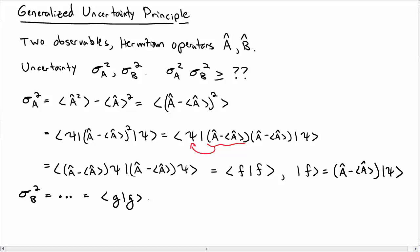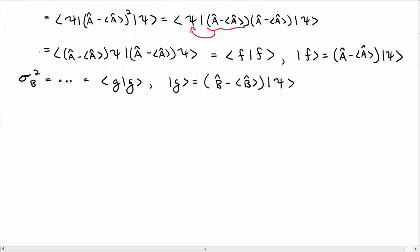For sigma-B squared, I can do a similar thing — it's the inner product of G with itself, where the state G is the operator B minus its expectation value acting on the generic state psi. So all I've done is rewrite sigma-A squared and sigma-B squared in this form.